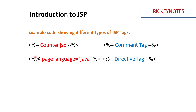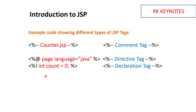The second tag is the directive tag, which uses the at-the-rate symbol as a special character. The third is the declaration tag, which uses an exclamation mark. Whenever you want to declare a variable, you follow this format — use a data type, then the variable name, and assign a value. That is how you declare things.